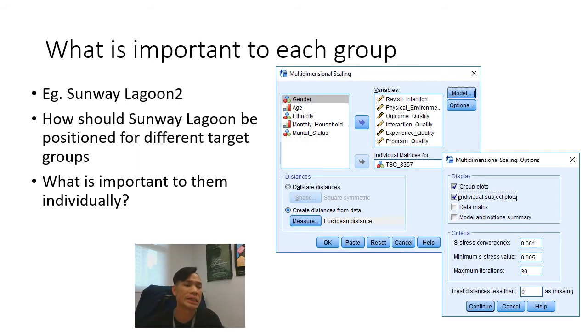I'm going to use this particular dataset here called the Sunway Lagoon 2. The Sunway Lagoon 2 has variables that look at revisit intention, physical environment, outcome, interaction quality, experience and program quality. I've also created certain targets. If you look at my segmentation video, you will see how I created the segments. This segment is basically the four different segments that I want to look at in creating what are important to them.